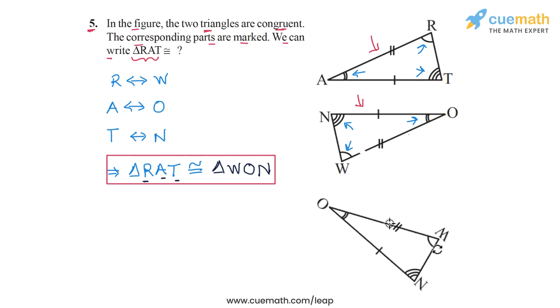So if I do something like this, now if you compare this triangle with this triangle, you can see that the orientations are now the same. So the angle at R corresponds to this angle at W, then the angle at A corresponds to this angle at O, and the angle at T corresponds to this angle at N.